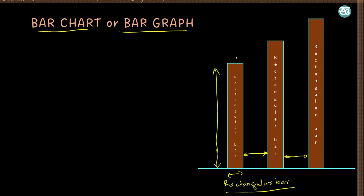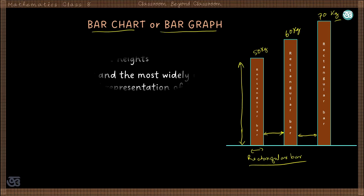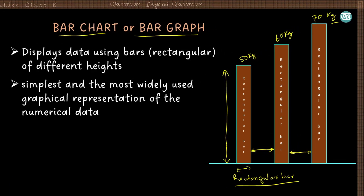Suppose these are the weights of three students — 50 kg, 60 kg, and 70 kg. From this graph we can quickly get the idea of the weight of the students. A bar chart displays data using rectangular bars of different heights, where the height depends on the frequency of the data.